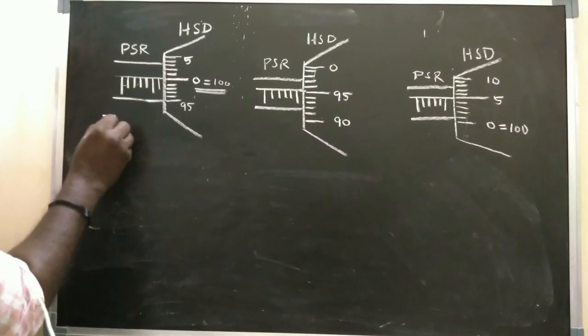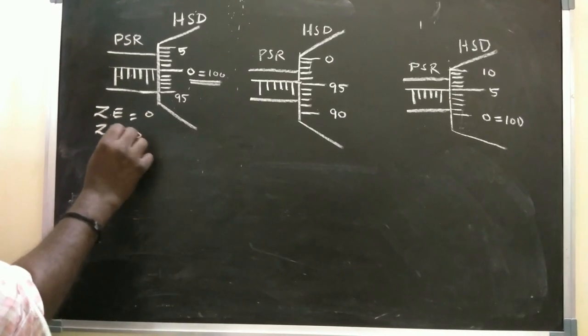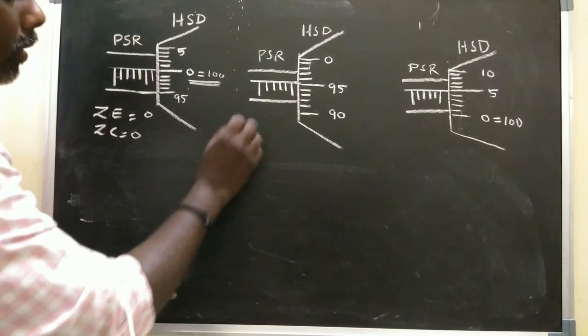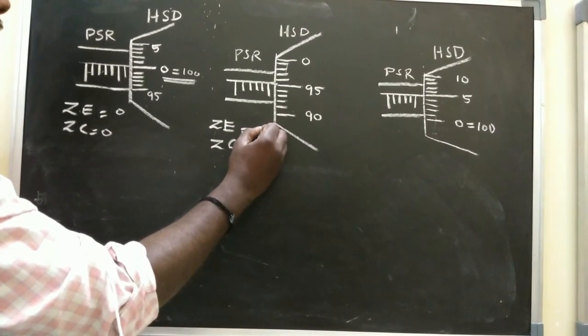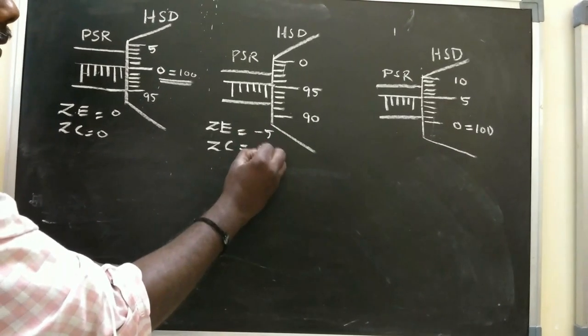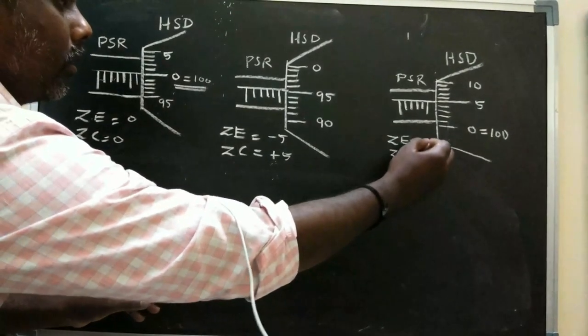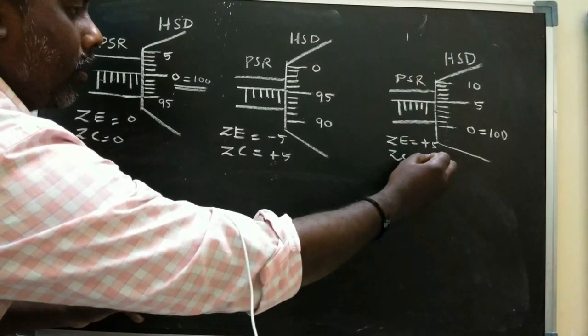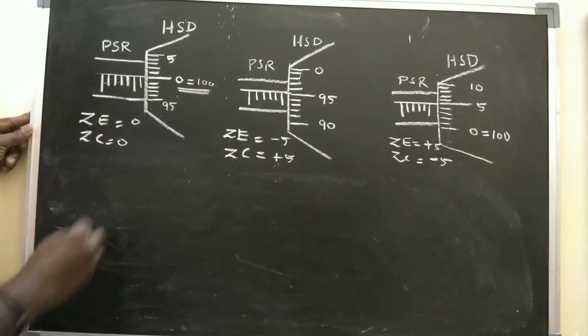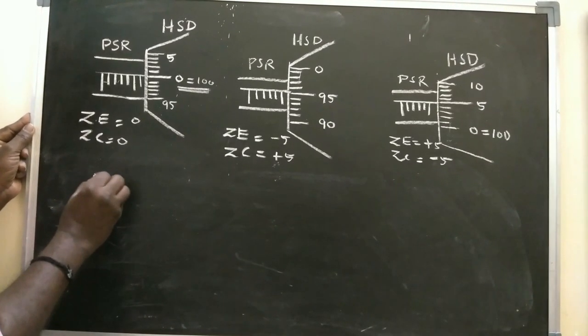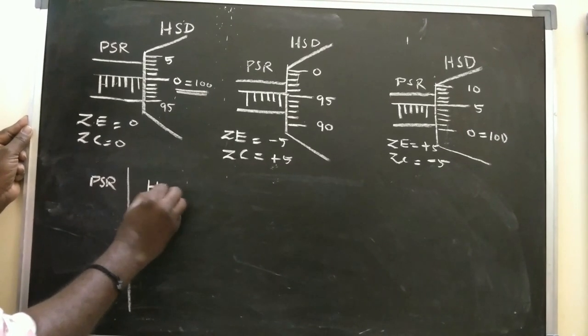The reading involves pitch scale reading (PSR) and head scale divisions (HSD). We start with zero error and zero correction concepts. PSR has different readings, and we need to understand how to get the correct reading from these values. Every measurement uses PSR plus head scale divisions with least count considerations.